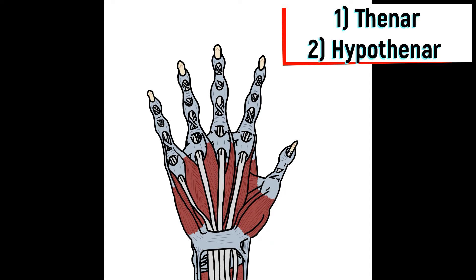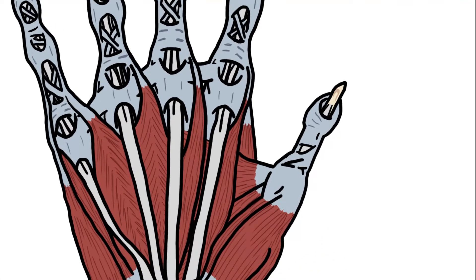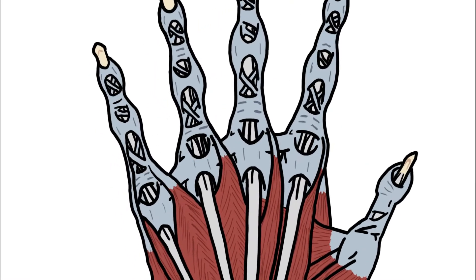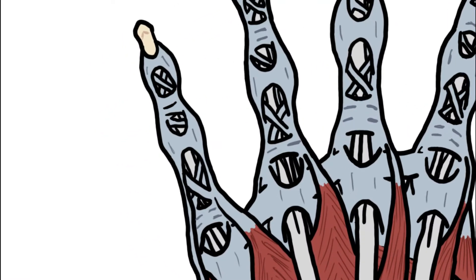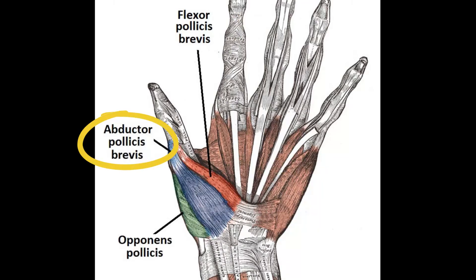Keep the thumb in mind when speaking about the thenar muscles, and keep the little finger in mind when speaking about the hypothenar muscles. There are three thenar muscles: the flexor, the abductor, and the opponens — so flexor pollicis brevis, abductor pollicis brevis, and opponens pollicis.